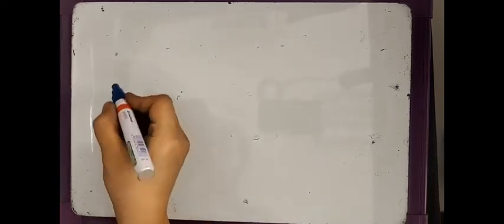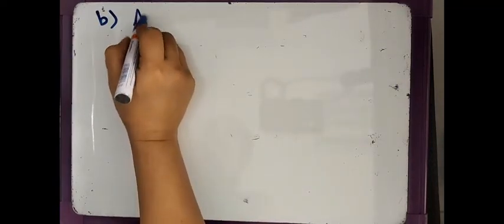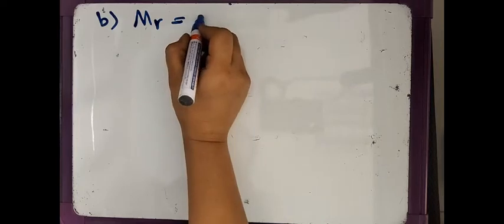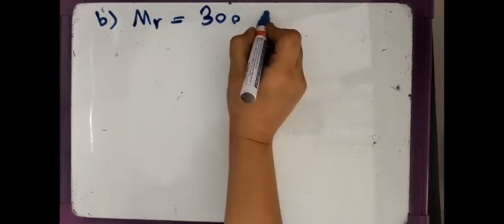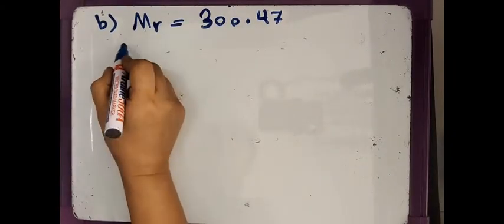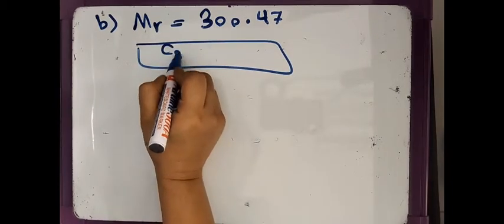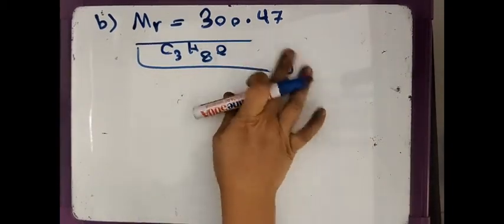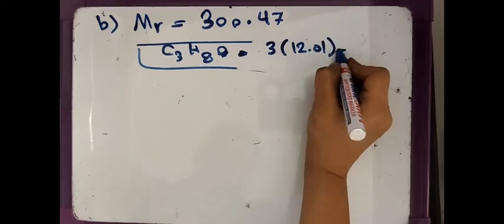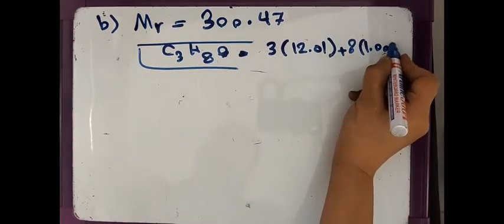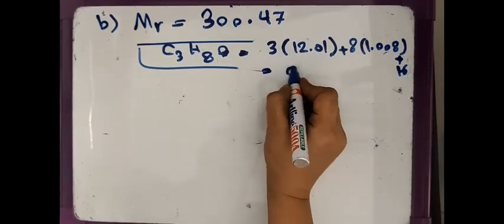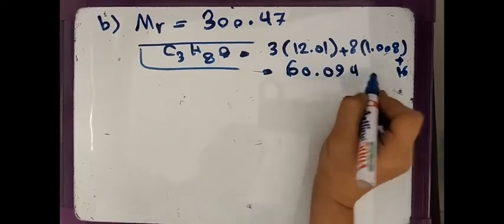For the next part, we need to find the molecular formula if the molar mass is 300.47 g/mol. First, calculate the molar mass of the empirical formula C₃H₈O: 3 × 12.01 + 8 × 1.008 + 16 = 60.094 g/mol.